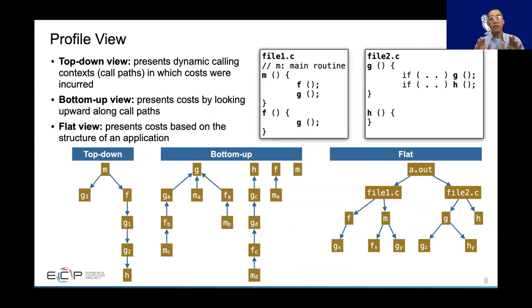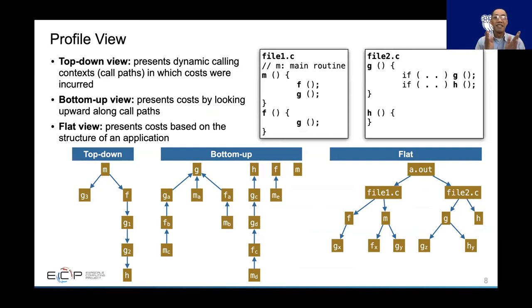I want to make sure we're on the same page about terminology, because some performance tools have the same words but different meanings, and some tools have different words for the same meaning. The profile view has three perspectives: the top-down presents the dynamic calling context in which cost is incurred; the bottom-up presents cost by looking upward along the call chain; and the flat view presents cost based on the structure of the application itself.